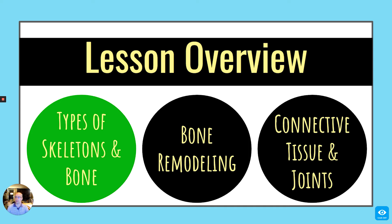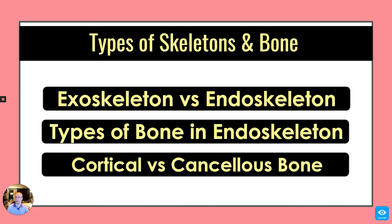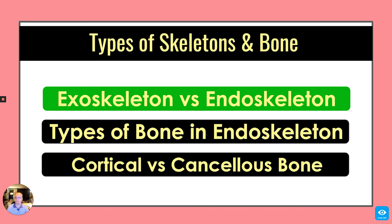So first, let's talk about the types of skeletons and bone. Here's our overview: first, we're going to talk about exoskeleton versus endoskeleton. Then we're going to talk about types of bone in endoskeletons. And then we're going to talk about cortical versus cancellous bone.